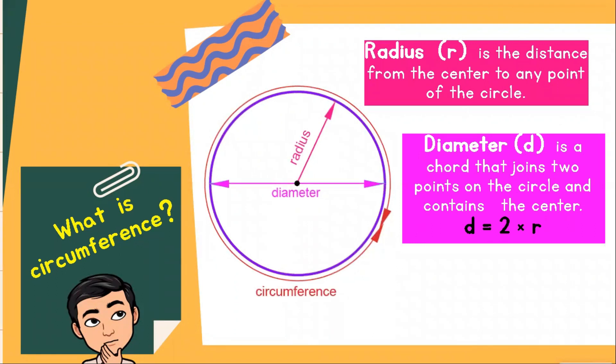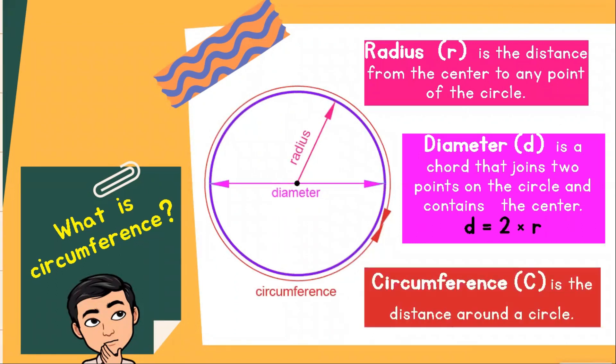And there you have it, the circumference. The circumference is the distance around a circle.